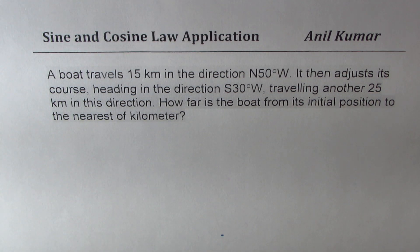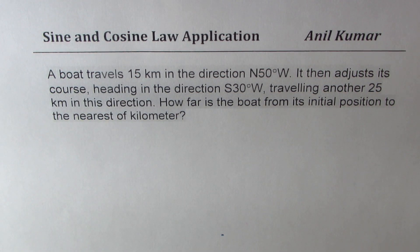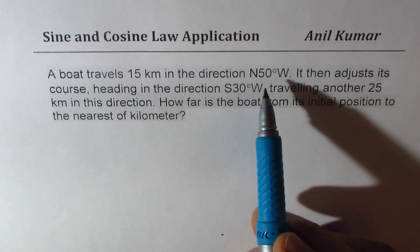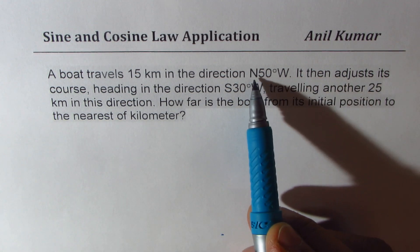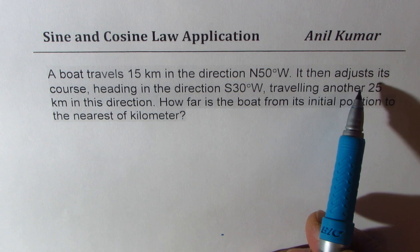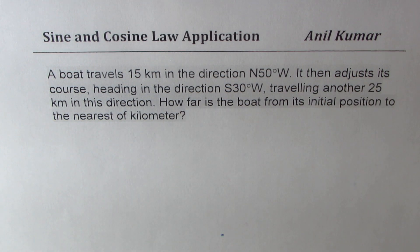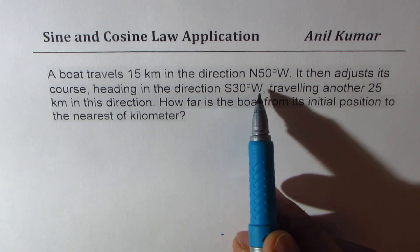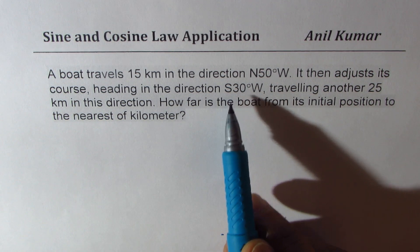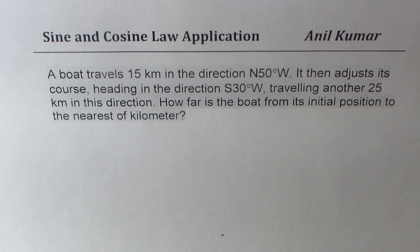I am Anil Kumar sharing with you questions based on sine law and cosine law. The question here is: a boat travels 15 kilometers in the direction 50 degrees west from north. It then adjusts its course heading in the direction 30 degrees west from south, traveling another 25 kilometers in this direction. How far is the boat from its initial position to the nearest kilometer?